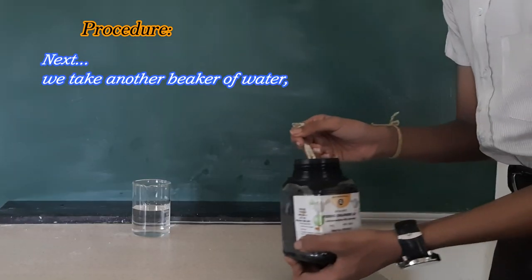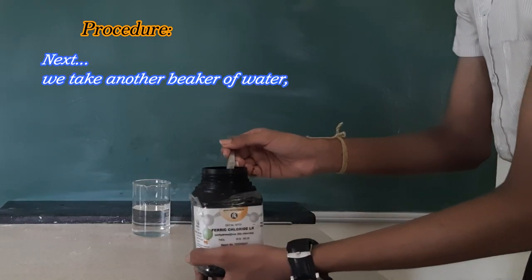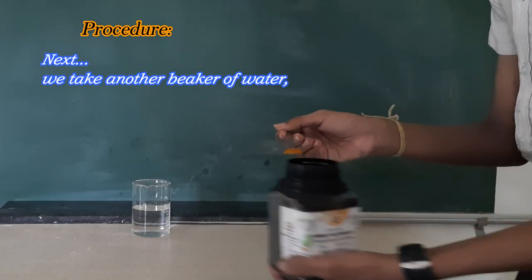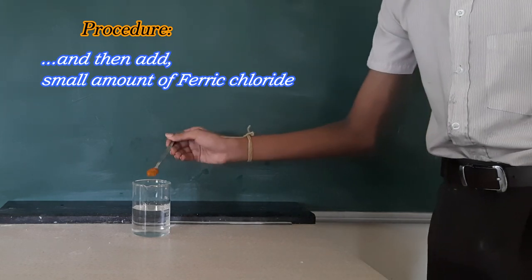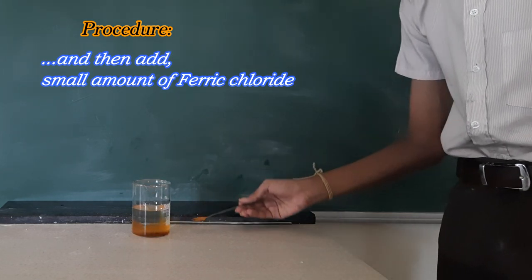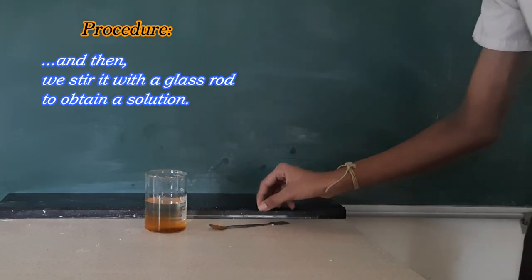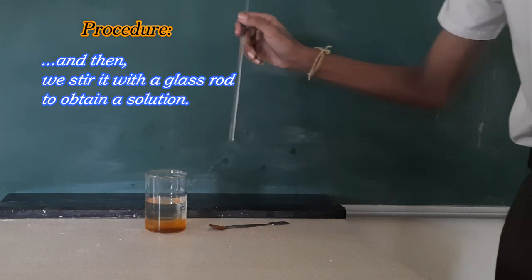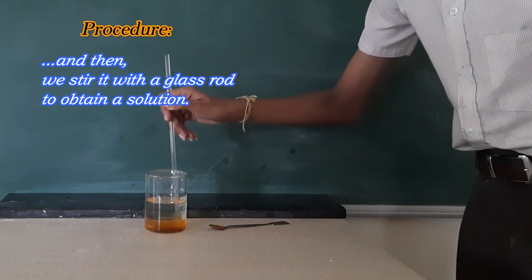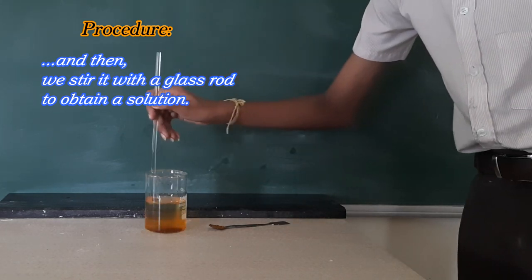Next, we take another beaker of water and add a small amount of ferric chloride, then stir it with a glass rod to obtain a solution.